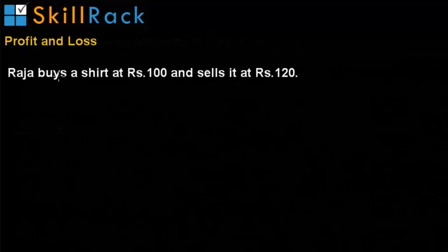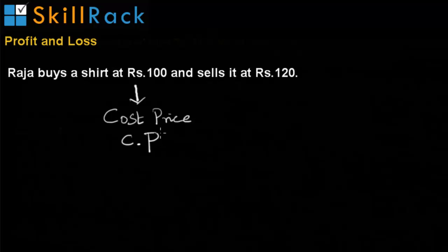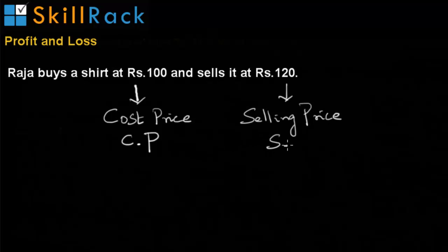In this session, let us look at the fundamentals of profit and loss. The example given is, Raja buys a shirt at Rs. 100 and sells it at Rs. 120. This buying price is called cost price, and the short form is CP. The Rs. 120 at which it is sold — any item being sold — is called selling price, or in short, SP.